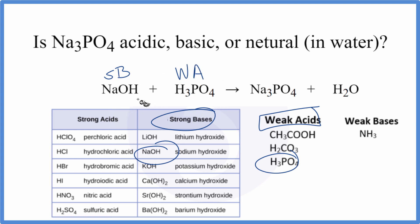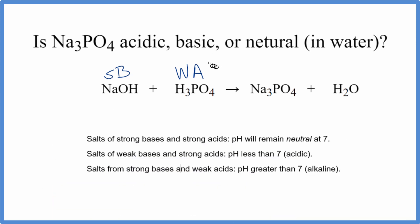So now we know the strength of our acids and bases. We have a strong base and a weak acid. Strong base and weak acid: pH will be greater than 7. It'll be alkaline. You could also say that it will be basic.